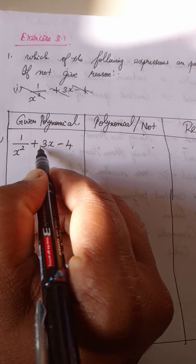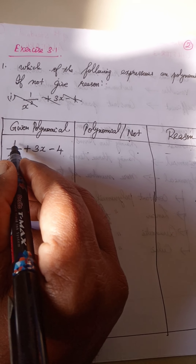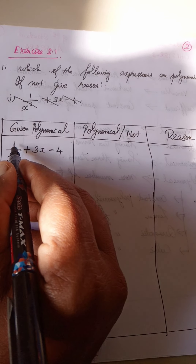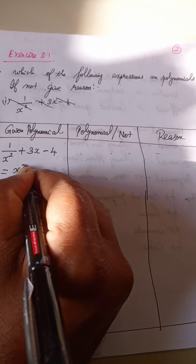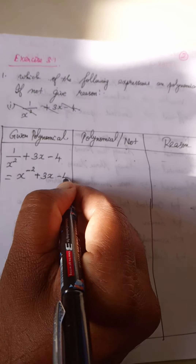Since x power minus 2 has a negative power, it is not a polynomial. Why? Because this is negative — a negative integral power is there. So it is not a polynomial. The reason is: negative integral power.